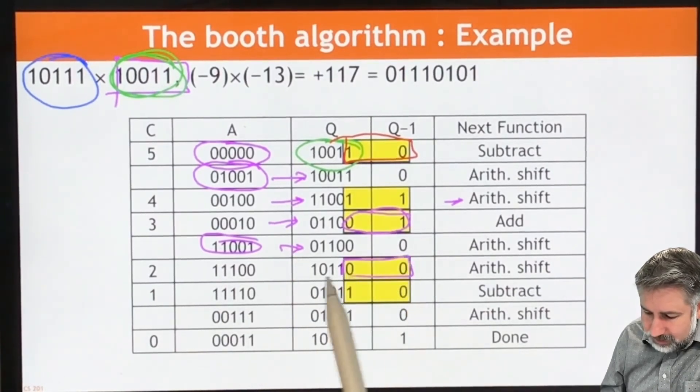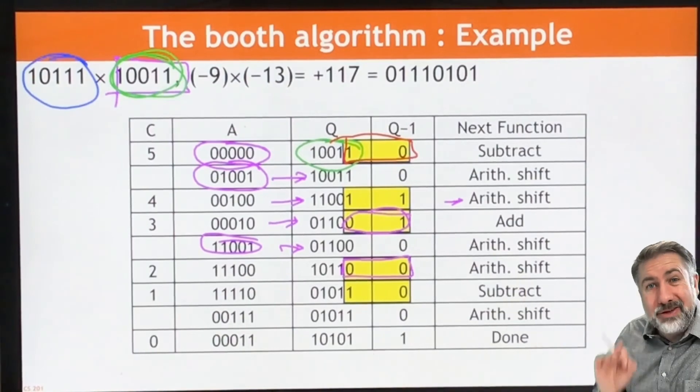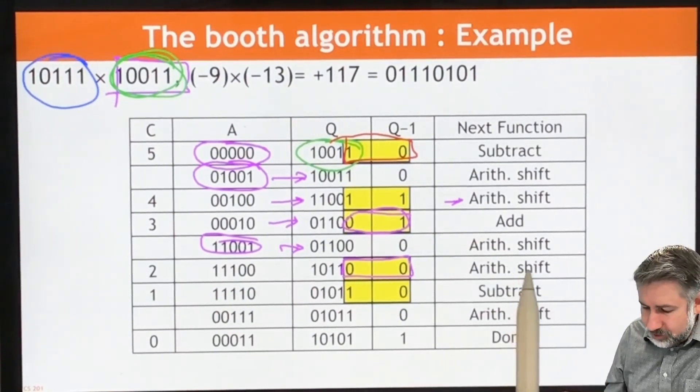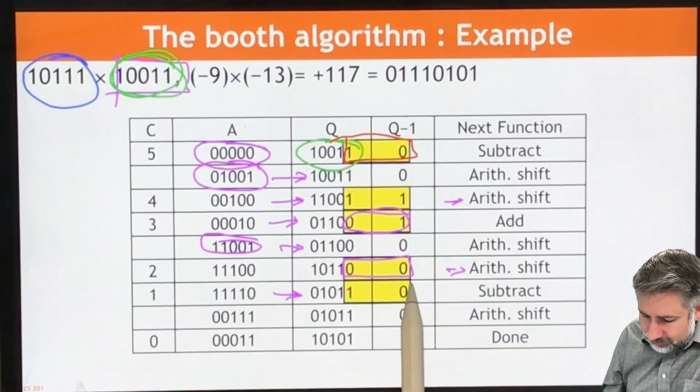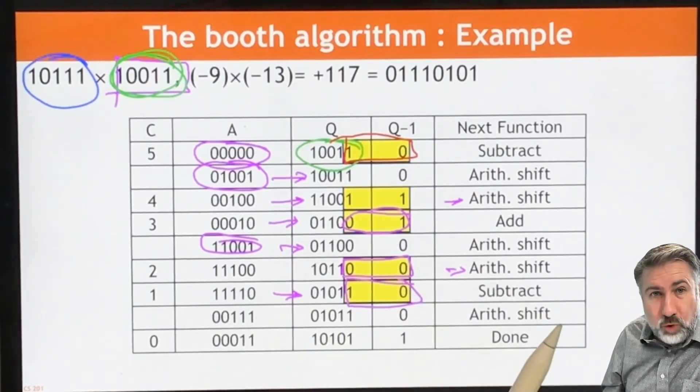Then we shift again. And we look at our two bits. And there's zeros. They're the same. So we don't add or subtract. We just shift. Same thing again. We shift. And the result now is looking here. We see this as one and zero, which tells us we need to subtract.